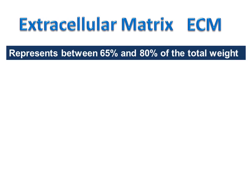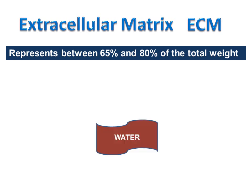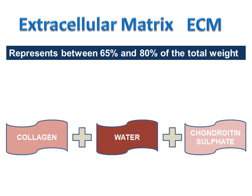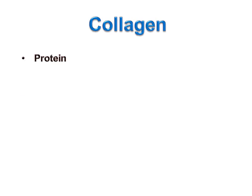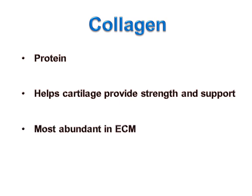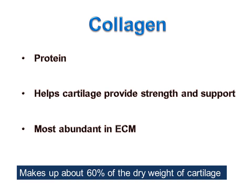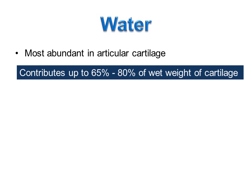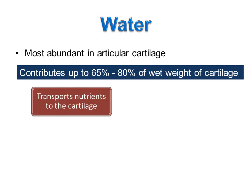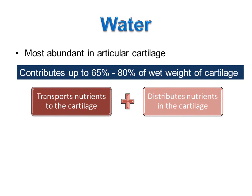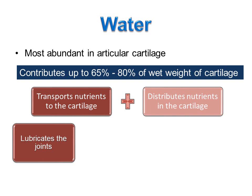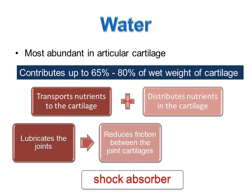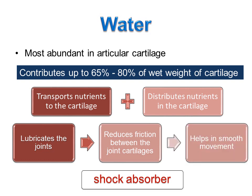The extracellular matrix (ECM) represents between 65% and 80% of the total weight of cartilage. ECM has a considerable amount of water, collagen fibers, and chondroitin sulfate. Collagen is a protein that helps cartilage provide strength and support. Collagen is the most abundant structural macromolecule in ECM, making up about 60% of the dry weight of cartilage and contributing up to 65% to 80% of the wet weight. Water helps to transport and distribute nutrients in the cartilage, lubricates the joints, and acts as a shock absorber, thus reducing friction and helping in smooth movement.